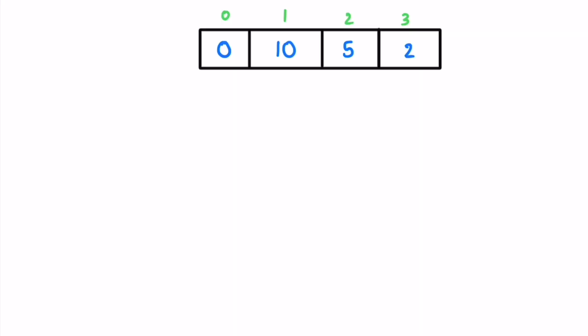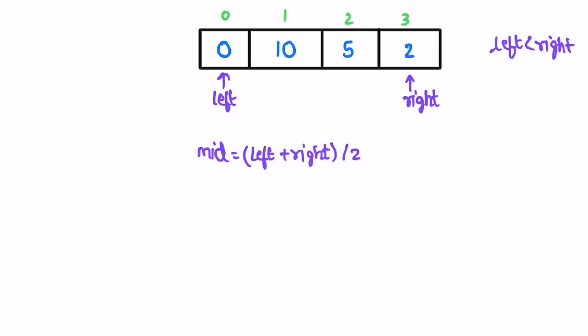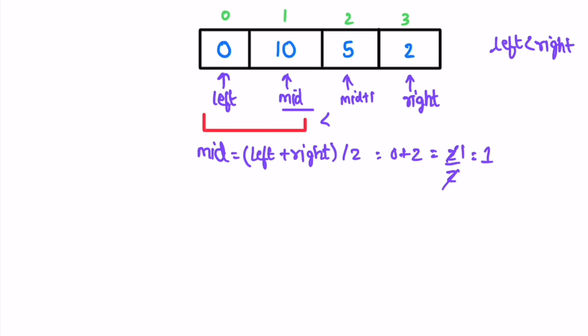Now the second approach uses binary search with O(log n) time complexity. Again we use two pointers — left at the beginning, right at the end — and a while loop running while left is less than right. We find mid as (left + right) / 2, so mid equals one. We check if arr[mid] is less than arr[mid+1]. Ten is not less than five, so we reduce the search space to the left by assigning right = mid.